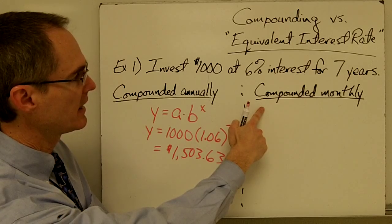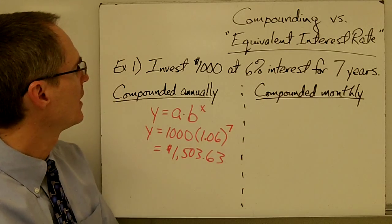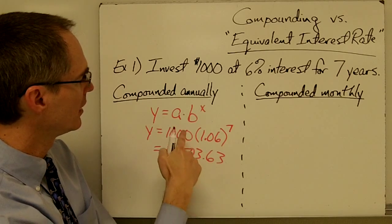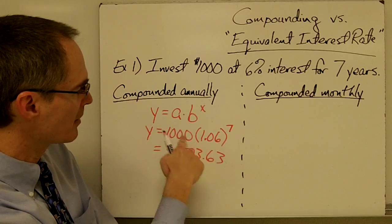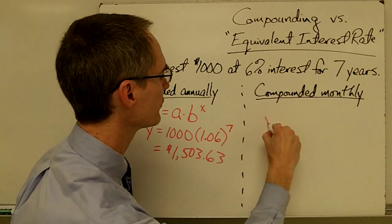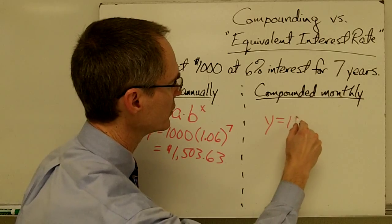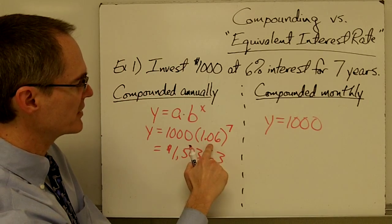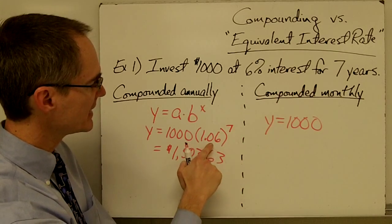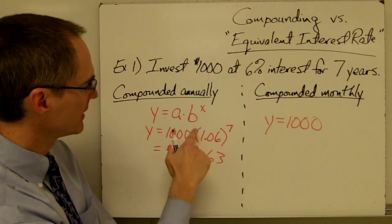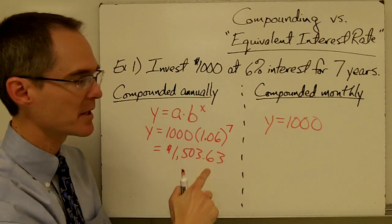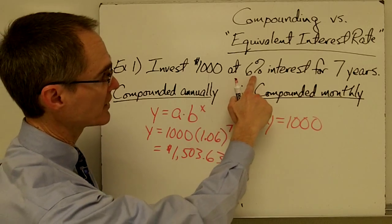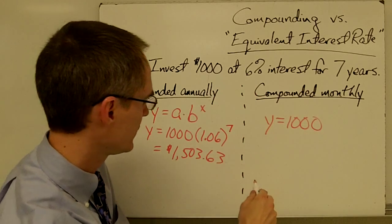How much would I have if I compound monthly? I'm going to use essentially the same standard form of the exponential function, but my numbers are going to be a little different. I still have the same initial value — one thousand dollars — but the B value is going to be different. If I'm compounding monthly, I need a monthly interest rate, not an annual rate of six percent. To get the monthly interest rate I take my annual rate and divide it by 12.